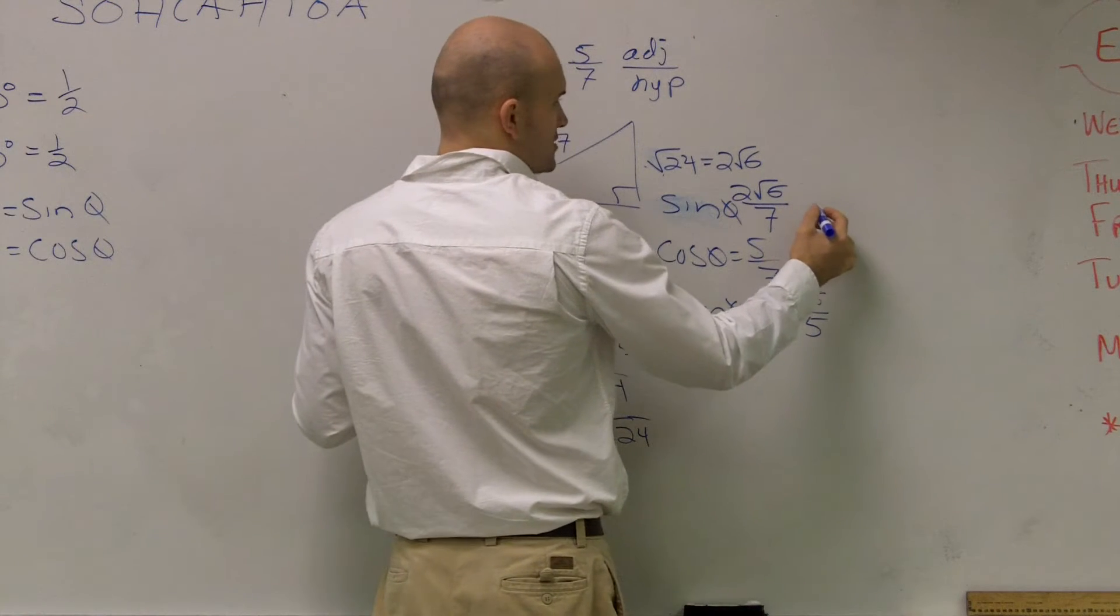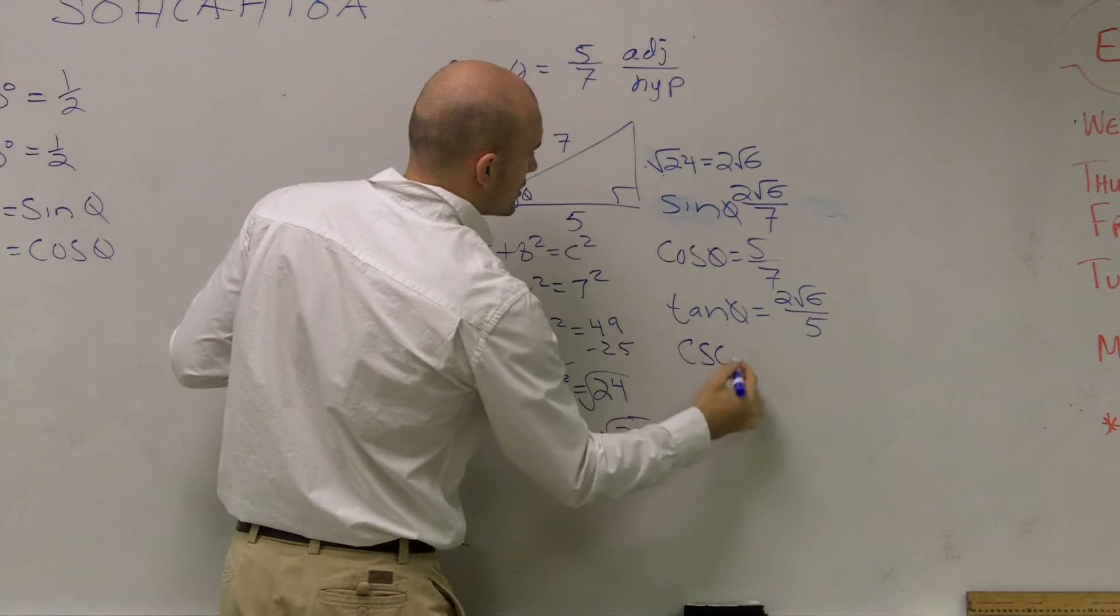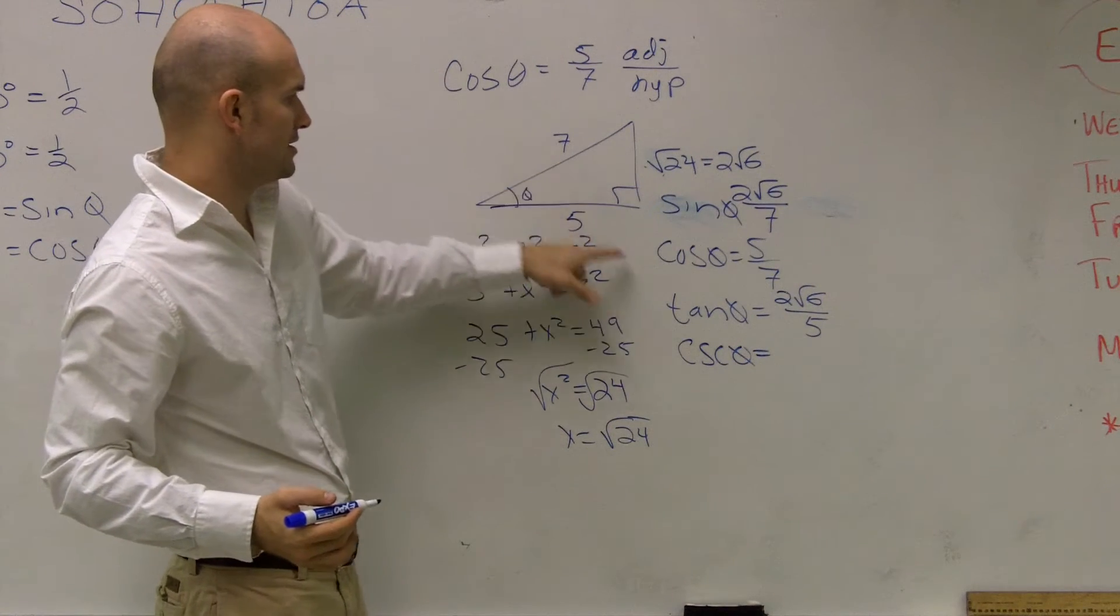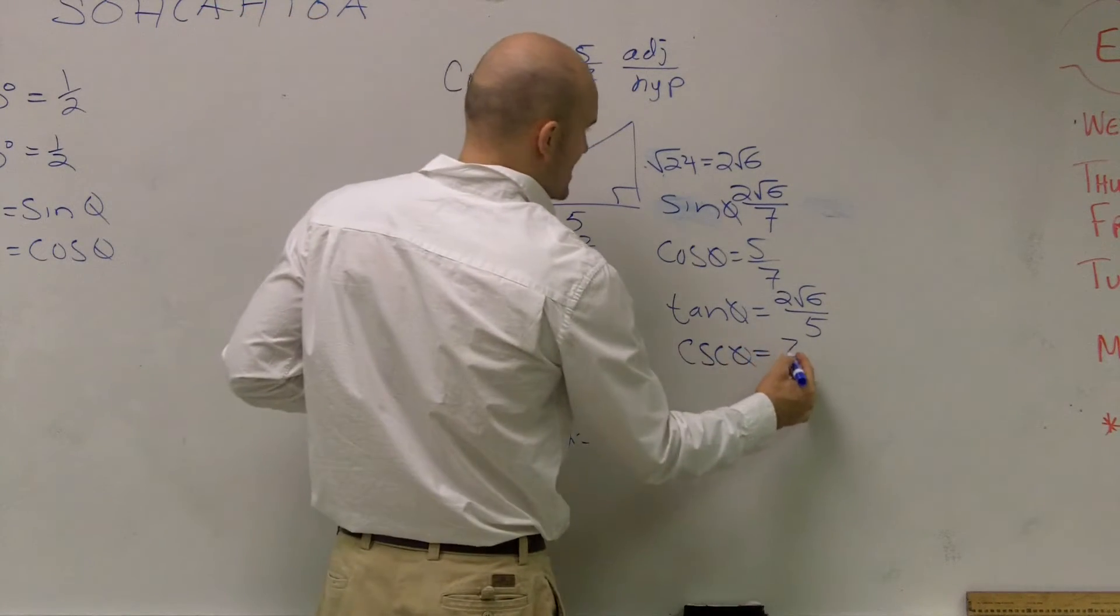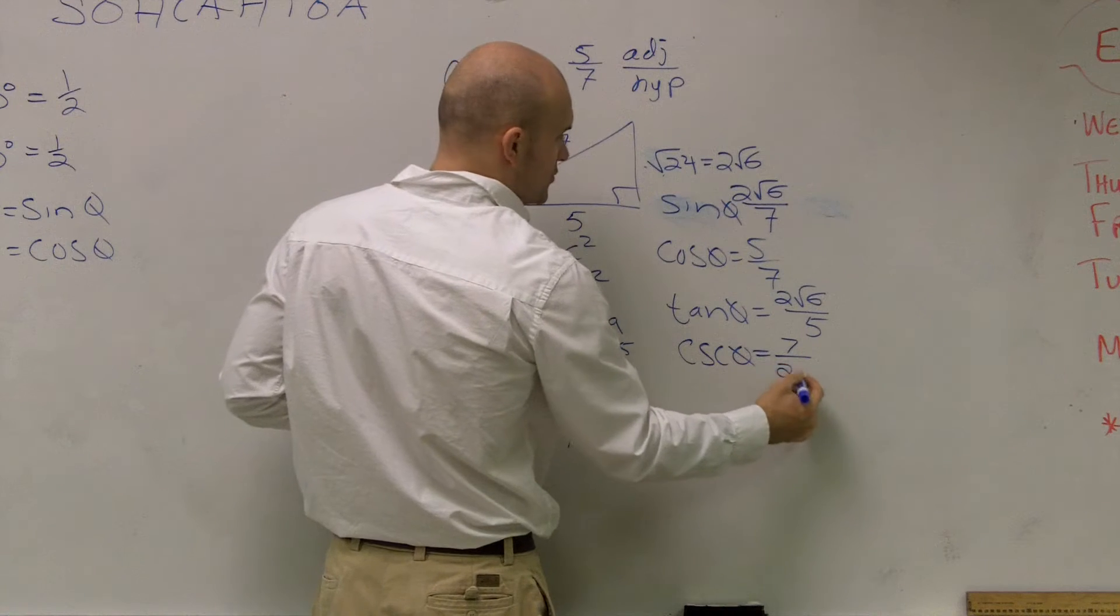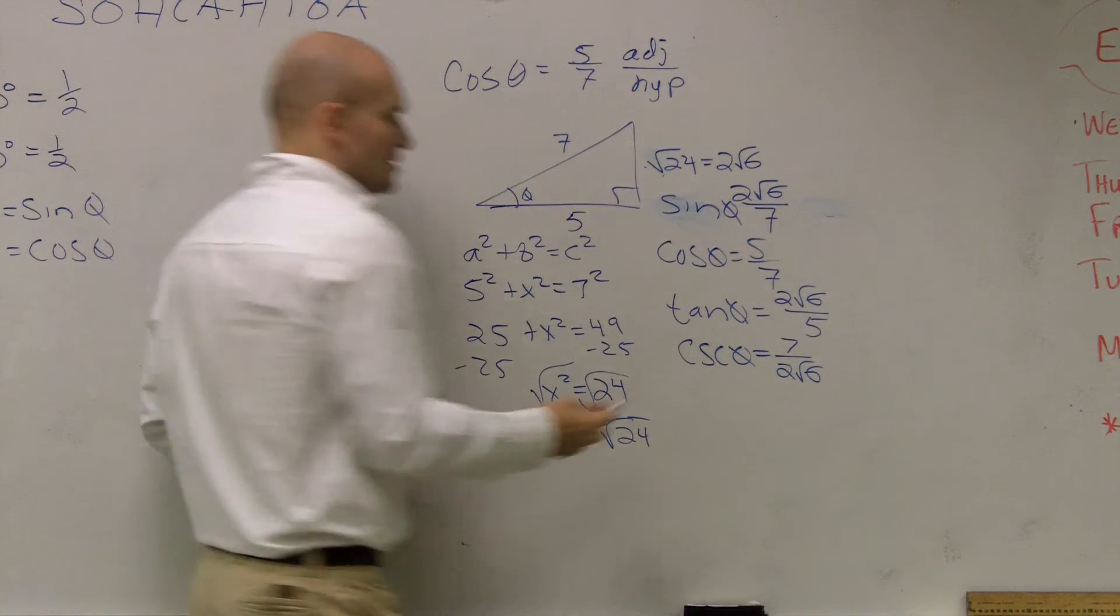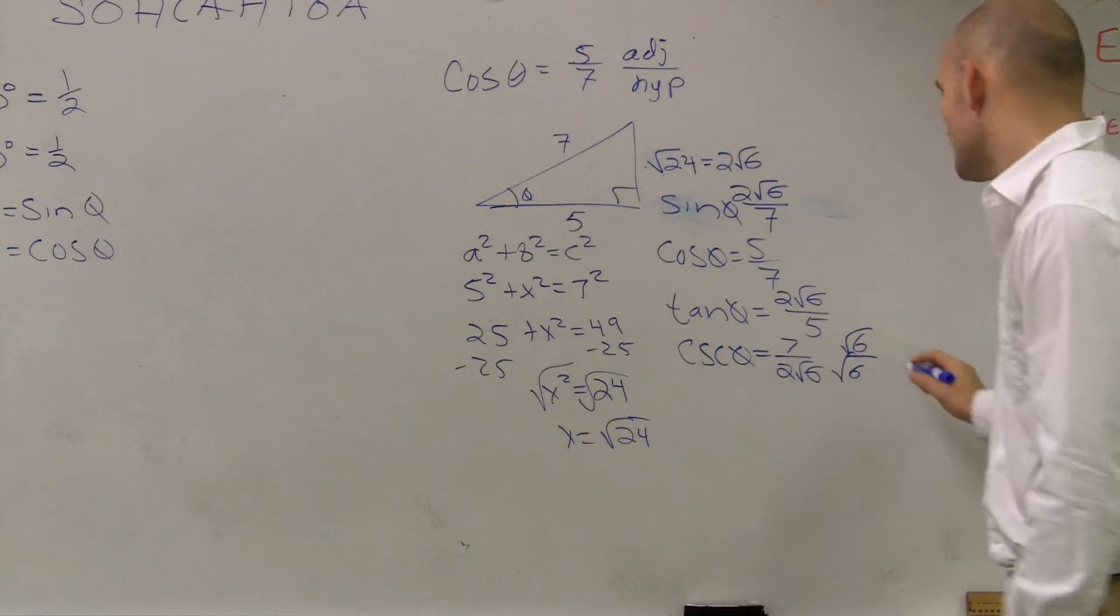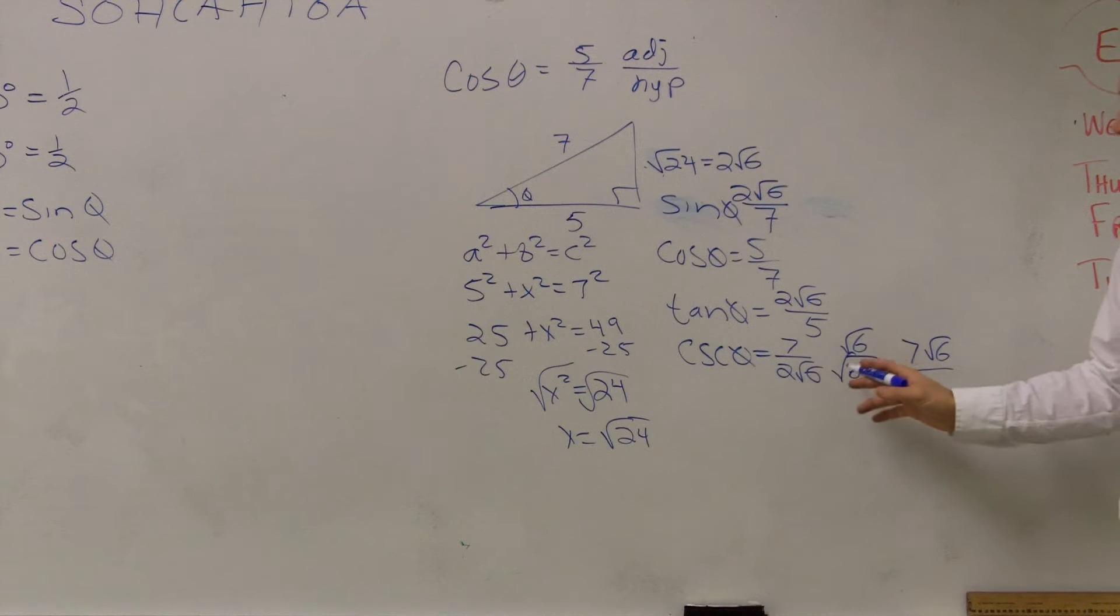Next one, let's do the reciprocal functions. So here, I'll have cosecant. I'll do it below. Cosecant of theta is going to equal, so it's going to be your hypotenuse over your opposite. So it would be 7 over, it's just that one flipped over, 2 root 6. Well, here, I'm going to have to rationalize the denominator. So I'm going to want to multiply by root 6 on your top and bottom. So what I get here is going to be 7 times root 6 over, 6 times root 6 is 6, 6 times 2 is 12.